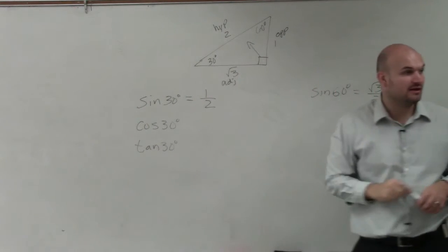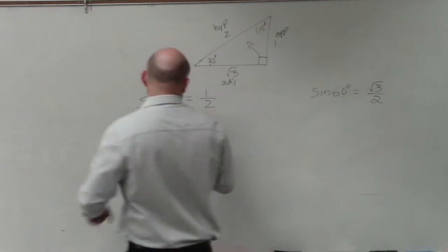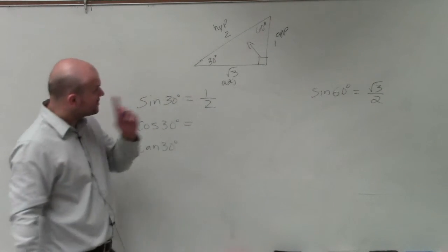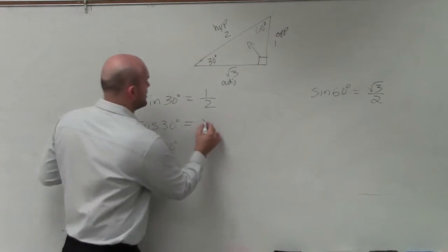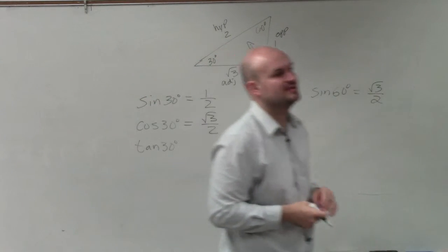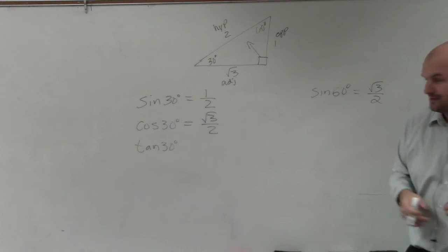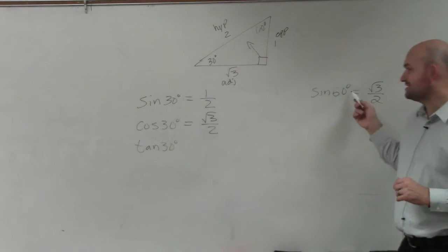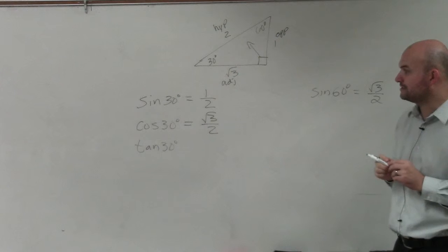Cosine, if you guys remember, is adjacent over hypotenuse. So the adjacent is the square root of 3 over 2. It is not a coincidence that the cosine of 30 is the same as the sine of 60, but we'll talk about that more later.